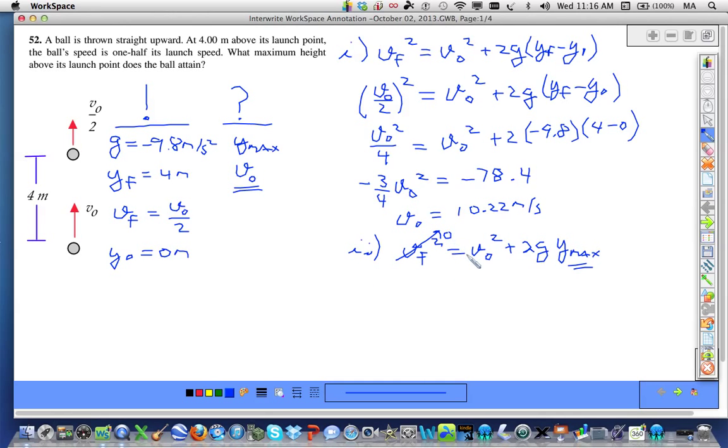Vf at the maximum height is 0. So, solving for y-max, we get y-max is equal to minus v-naught squared over 2g. This is the typical algebra, the symbolic algebra in terms of y-max.